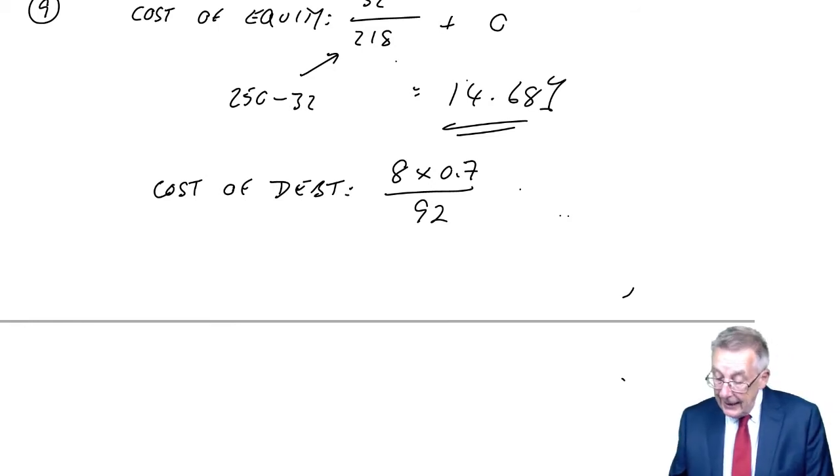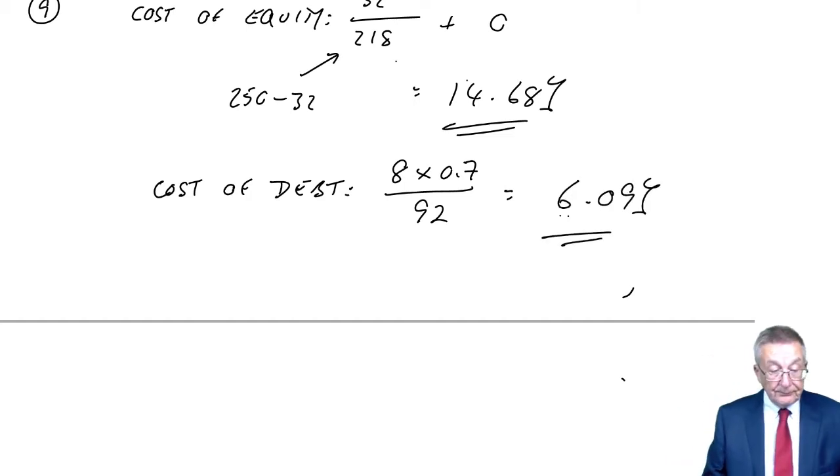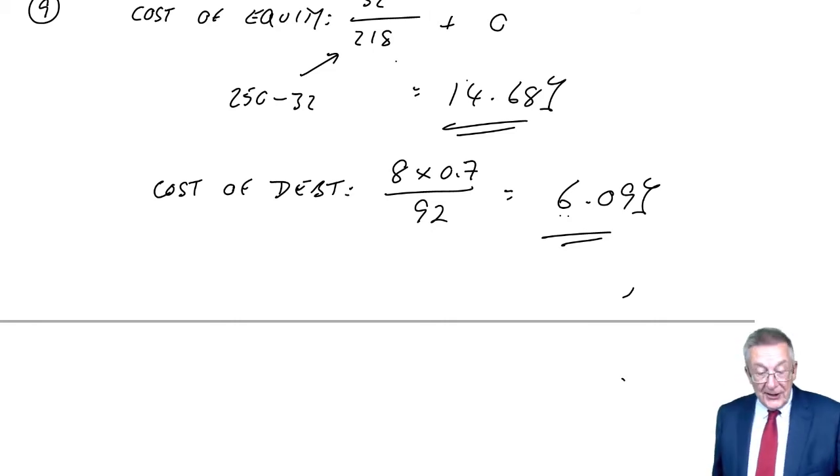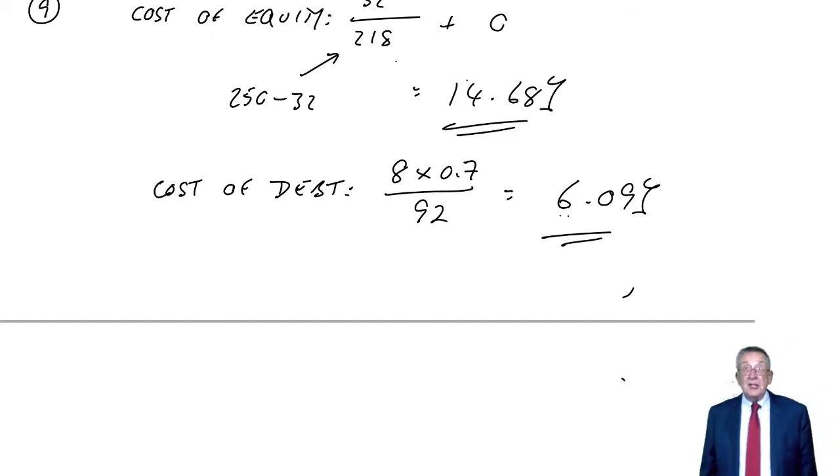So there are the individual costs, and incidentally, we talk a lot about risk later, but I'm certainly not surprised that the cost of equity is higher than the cost of debt, because shares are more risky. You know, with debt, you're getting fixed interest, it's not going to change with equity. They're expecting 32 a year, but obviously the chances of it being 32 a year are remote, it might be higher, it might be lower, it's more risky.